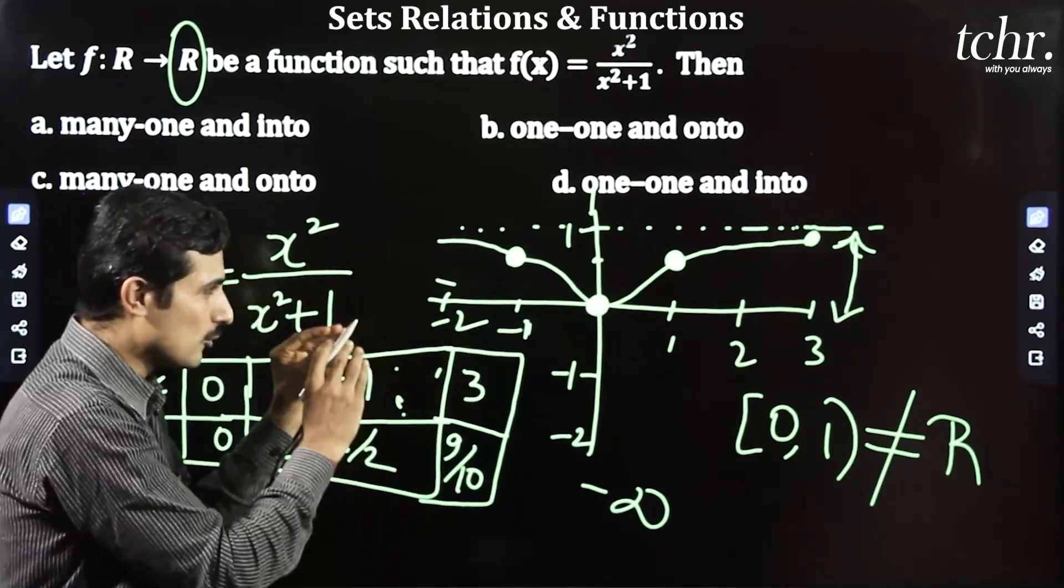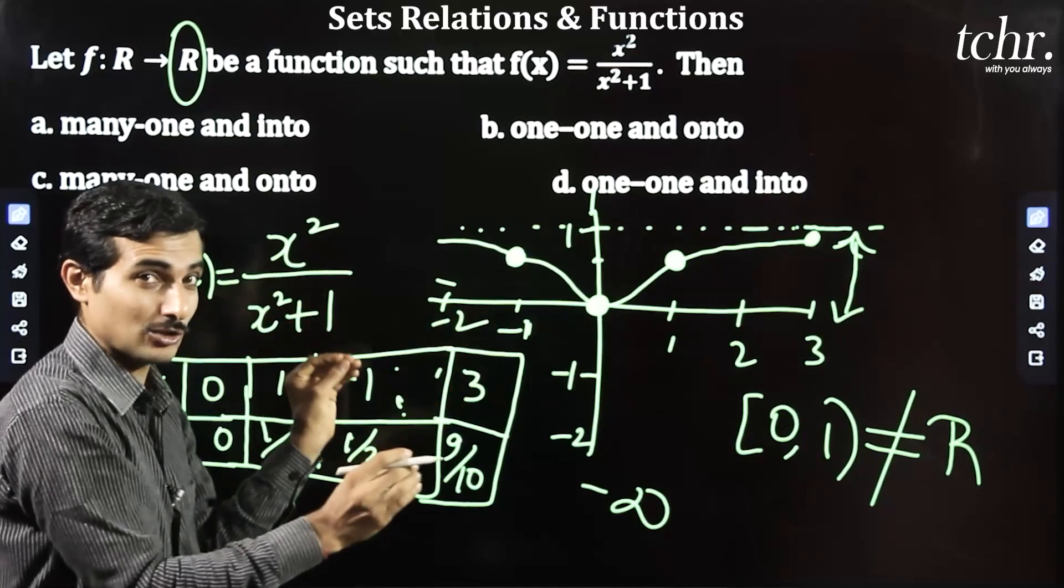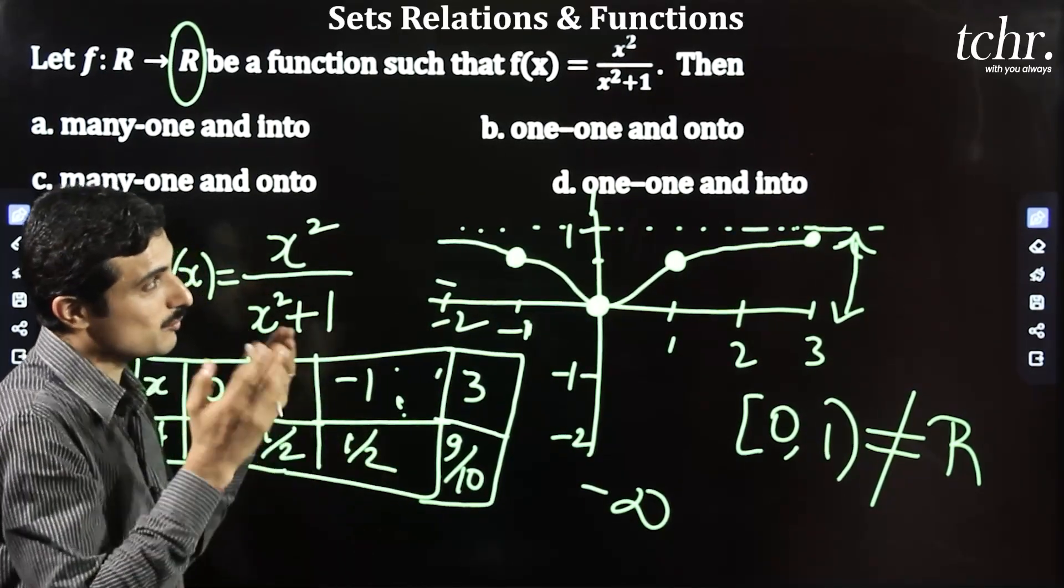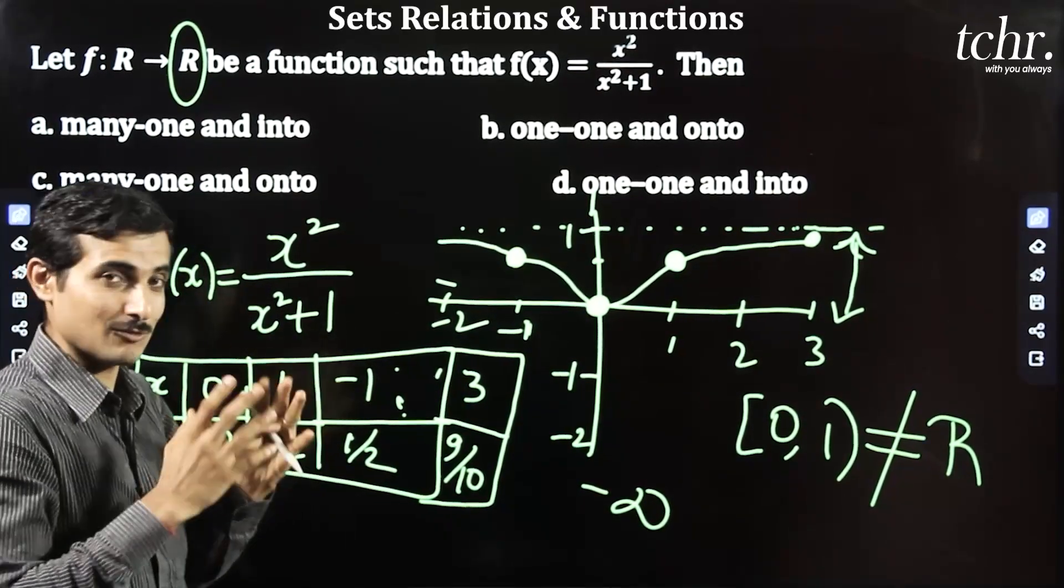This way, draw a rough graph and you'll immediately know whether it is one-one, onto, many-one, or which type.